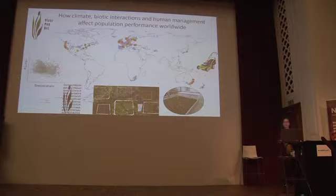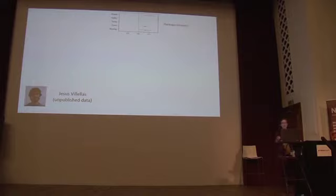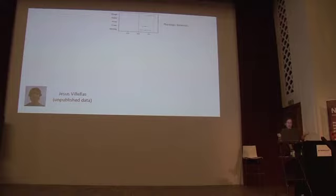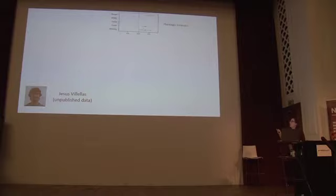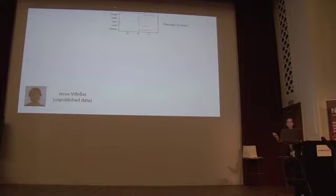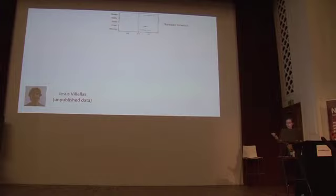Flipping to the Plant PopNet dataset — we haven't yet published results but here's a taster. This is work by Jesus Villeras, a postdoc in my lab, looking at plant traits including dry biomass of Plantago lanceolata from about 40 sites. We're interested in native versus non-native range, and we find Plantago biomass is much larger in the native range than in the non-native range. We also find effects of vegetation cover: in highly vegetative plots, plants are larger because they compete for light, and in un-mown plots we find much larger Plantago biomass.